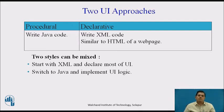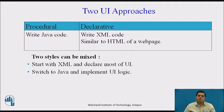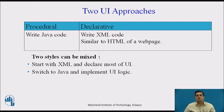As a developer, there are two user interface approaches to consider while developing a mobile app: procedural and declarative. With the procedural approach, the developer writes Java code first. With the declarative approach, the developer writes XML code, which is similar to HTML of a web page. It's up to the developer to decide which approach to adopt.